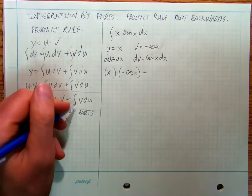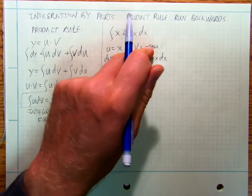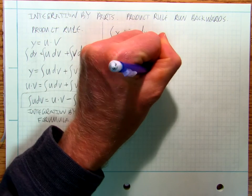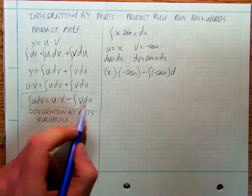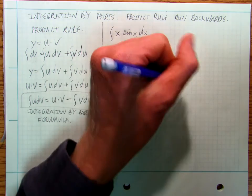minus the integral of v, which is negative cosine x, times du, which in this case is dx.